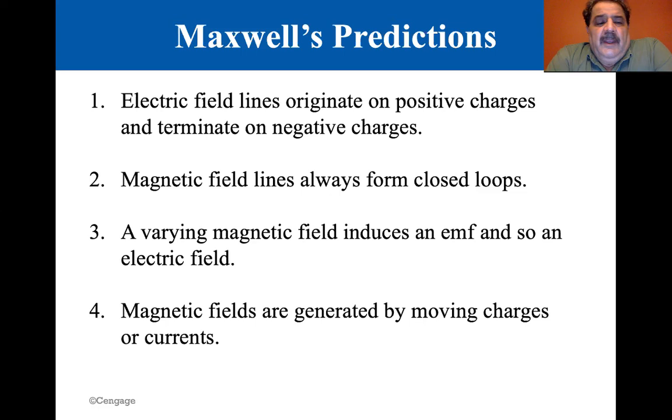There are always complete loops. They don't ever emanate out from a north and not end up at a south, because you always have a south adjoining it. Even on the north. Even on the earth, you have the magnetic field lines of the earth, or as large as that is. Number three is a varying magnetic field induces an EMF, and so an electric field.